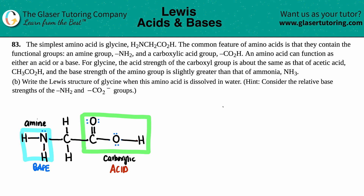Number 83. The simplest amino acid is glycine, which is H2NCH2CO2H. The common feature of amino acids is that they contain the functional groups: an amine group, which is NH2, and a carboxylic acid group, which is CO2H. An amino acid can function as either an acid or a base. For glycine, the acid strength of the carboxyl group is about the same as that of acetic acid, CH3CO2H, and the base strength of the amino group is slightly greater than that of ammonia, NH3.